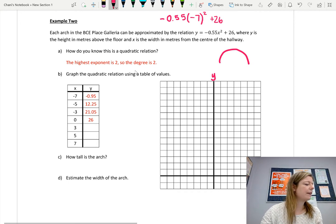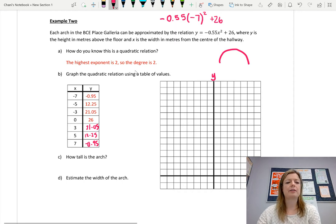Did you pause? All right, so you should have gotten 21.05 for here, and 12.25, and then negative 0.95. Notice that these are the same y values that occur in the negative x values. And again, that's just because this parabola is symmetrical. Parabolas are symmetrical, so that will happen.